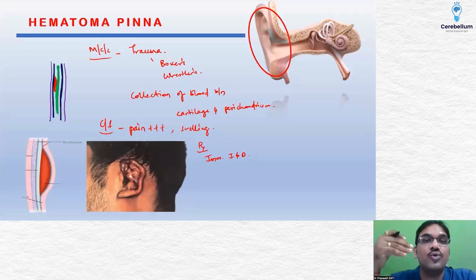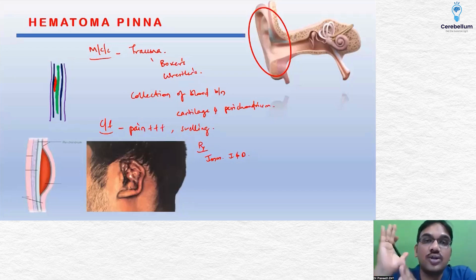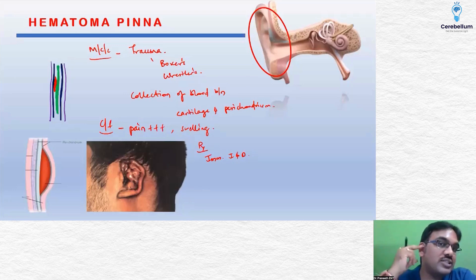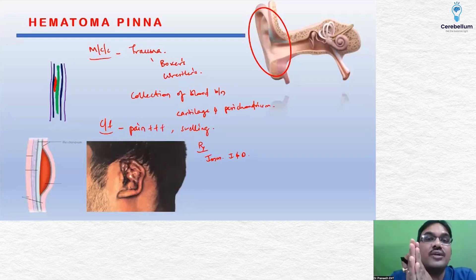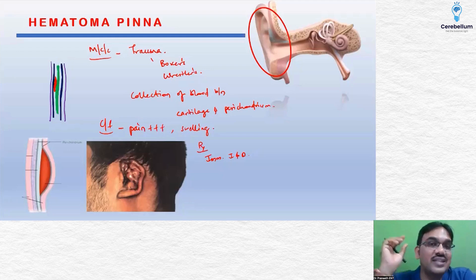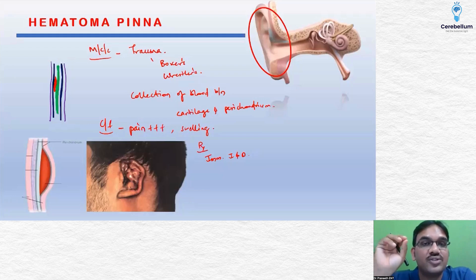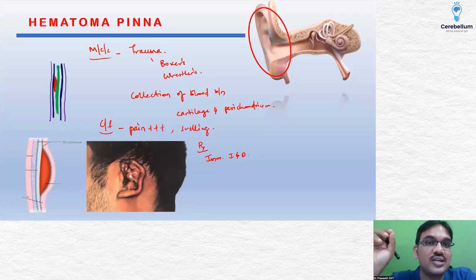The treatment for this condition is immediate incision and drainage — you have to drain out the fluid and relieve the pressure inside. Otherwise, due to constant pressure on the cartilage, the cartilage will get necrosed. Once the cartilage in the area of the hematoma gets necrosed, the shape of the pinna will get deformed, giving the ear a cauliflower-like appearance.